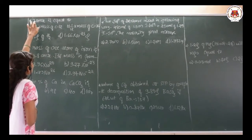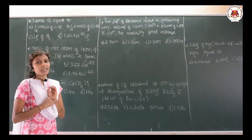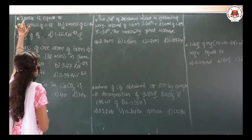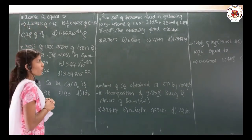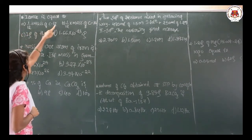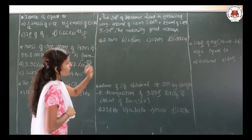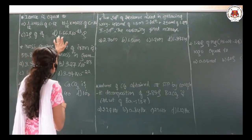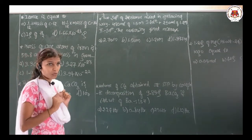Here, 1 amu — that is 1 atomic mass unit — is equal to what? The choices are: (a) 1/12th mass of the carbon-12 isotope, (b) 1/12th mass of the carbon-16 isotope, (c) 1 gram of hydrogen, and (d) 1.66 × 10⁻²³ gram.